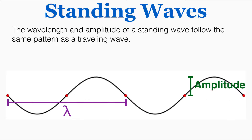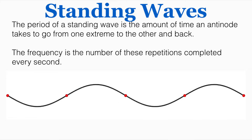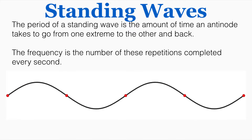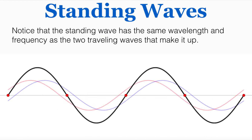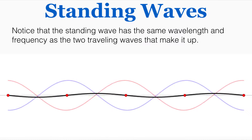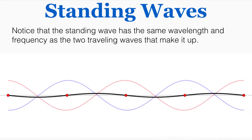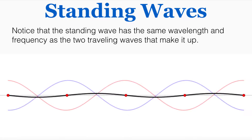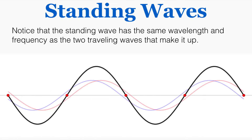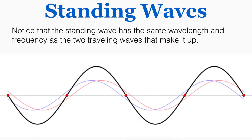The amplitude is from the center point to the maximum point, not from one extreme to the other. The period of a standing wave is the amount of time an antinode takes to go from one extreme to the other and back, and the frequency is the number of these repetitions completed every second. Importantly, the standing wave has the same wavelength and frequency as the two traveling waves that make it up, so their periods and frequencies are equal.